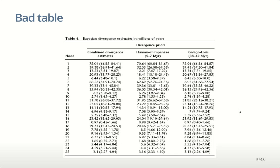We'll start with some examples of good and bad charts and tables. This is clearly a very bad table, bad for a number of reasons. The first thing that's obviously bad is that there's way too much precision in the numbers. We've got a number like 75.04 million years, but the range is almost 20 million years — clearly we don't need the decimal places at all. The very first thing we should do is get rid of all the precision that is basically completely meaningless.